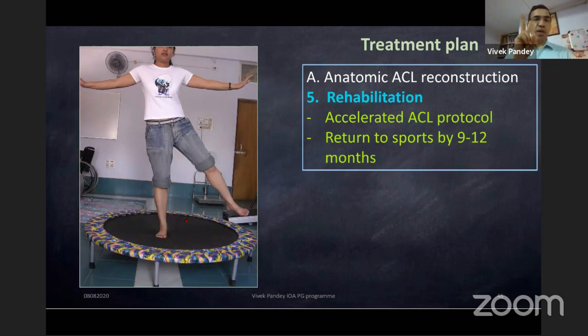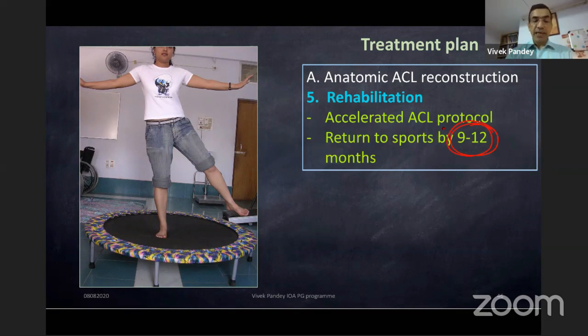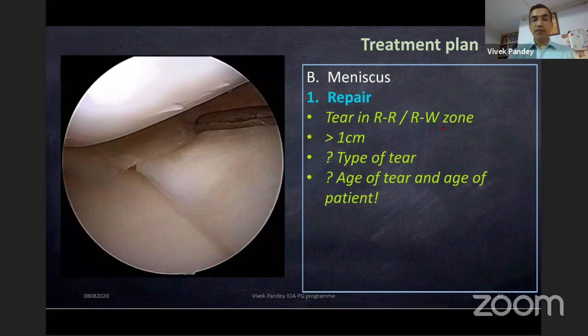Rehabilitation: the key word is accelerated ACL rehabilitation protocol. Return to sport: usually after nine to twelve months. Before return to sport, especially contact sports, the patient must be clinically fit, cleared by the physiotherapist, and an MRI done to confirm the graft has completely healed.